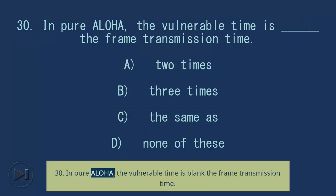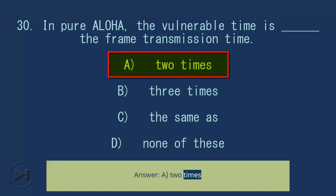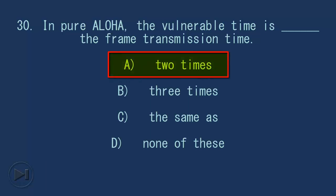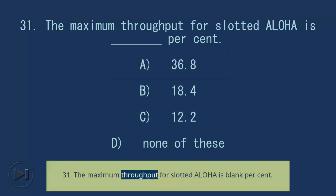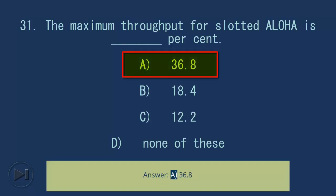Question 30: In pure Aloha, the vulnerable time is blank the frame transmission time. A) Two times, B) Three times, C) The same as, D) None of these. Question 31: The maximum throughput for slotted Aloha is blank percent. A) 36.8, B) 18.4, C) 12.2, D) None of these. Answer: A) 36.8.